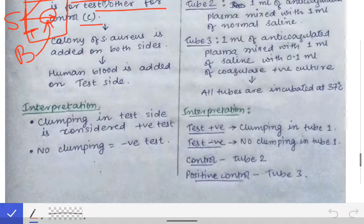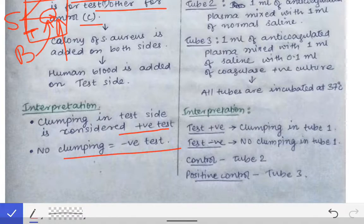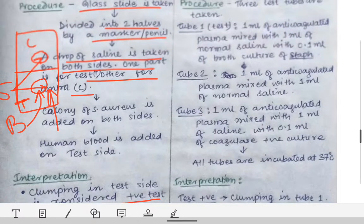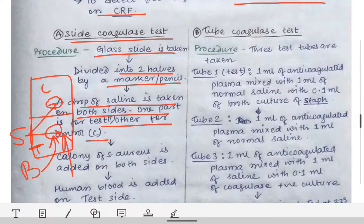Interpretation of the slide coagulase test: if clumping is seen on the test side, the slide coagulase test is positive. If no clumping is observed, the test is negative.